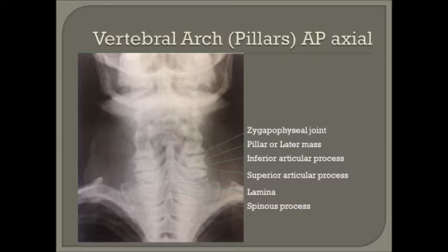For the vertebral arch AP axial projection, we should be able to visualize posterior elements of the cervical vertebra — the upper three or four vertebra, the articular processes in their facets, the lamina, and the spinous processes. The main purpose of this projection is to visualize any damage done to the patient from whiplash injuries.